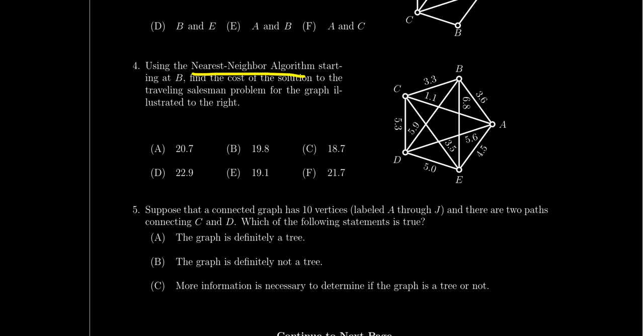Question number four is a traveling salesman problem. You'll run the nearest neighbor algorithm on a complete weighted graph such as K5 with various weights. The nearest neighbor algorithm needs a starting point — the problem will specify it, for example starting at vertex B. Different starting vertices can lead to different answers, so if you don't start at the specified vertex, you might get the wrong answer. Also, don't use the cheapest link algorithm here — it could produce a different answer than nearest neighbor starting at B.